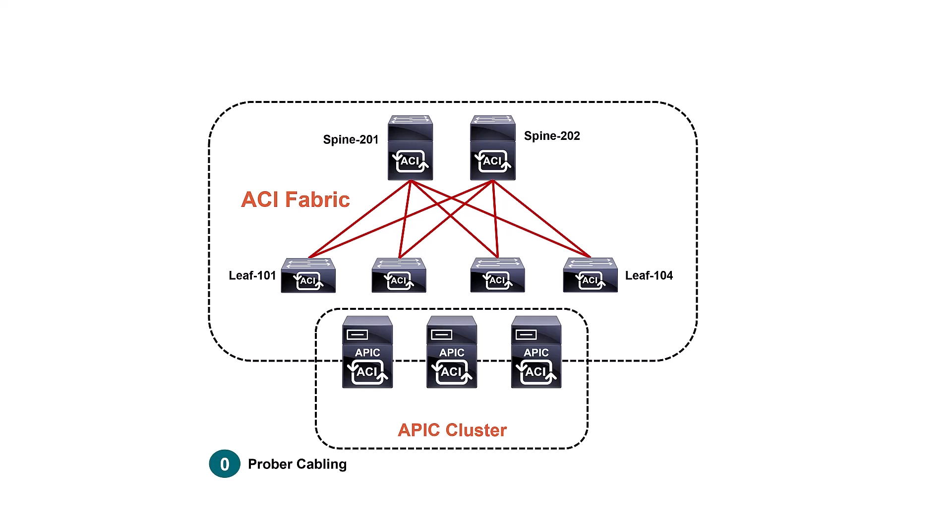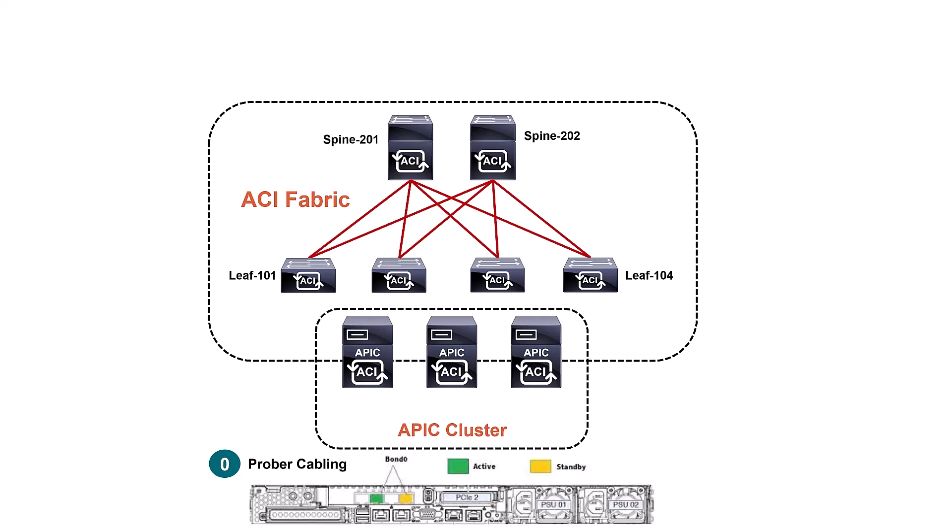Those devices won't connect themselves, so make sure you follow the exact spine-and-leaf topology — spines connected to leaves, leaves connected to spines. But where do you connect the APIC controller? Whether you have one APIC (which is very risky) or a cluster of three, five, or seven, here we have three — they get connected to the leaf switches and leaf switches only. How many cables and interfaces do you need?